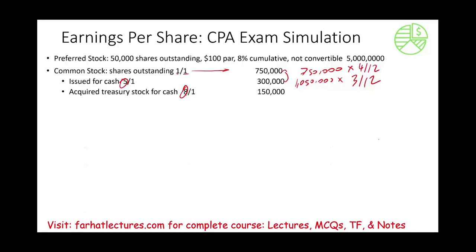On August 1st, we repurchased treasury stock, deducting 150,000 shares, bringing the total down to 900,000 shares. From August through the end of the year — August, September, October, November, December — those 900,000 shares were outstanding for 5 out of 12 months. Checking: 4 + 3 + 5 = 12 months accounted for. This is how we prorate the shares.